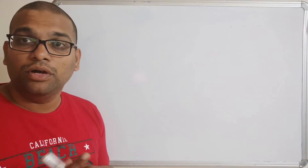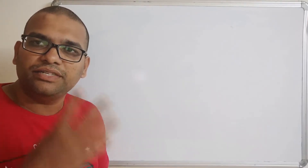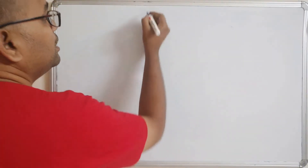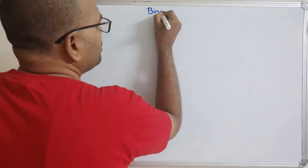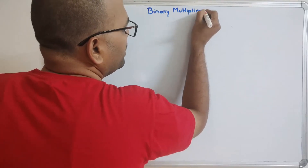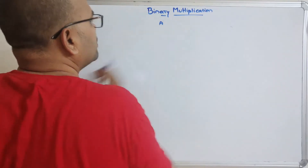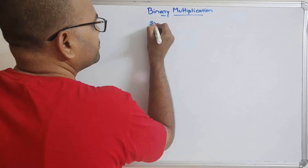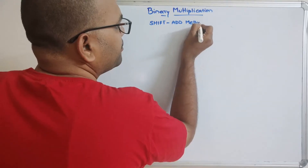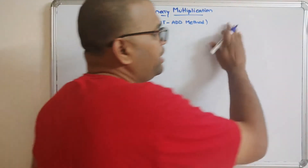In this session we'll discuss the shift-add method. As the name itself indicates, we are supposed to perform two different operations: a shift operation as well as an add operation. This session covers binary multiplication using the shift-add method for unsigned numbers.